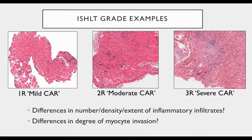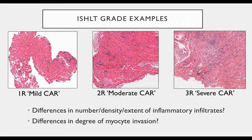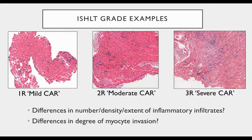Here are three examples of different ISHLT grades. On the left, a 1R mild rejection case; in the middle, a 2R moderate rejection; and on the right, a 3R severe rejection. There are probably real, albeit subtle, differences in the number and density of little blue cells between these slides, and maybe even some difference in the degree of encroachment on myocytes. But given the vagaries of the criteria, exactly where to draw the line of distinction between one grade and another is obviously going to end up being fairly subjective.